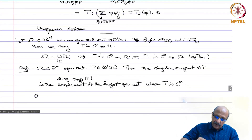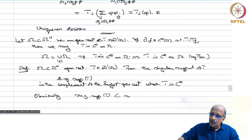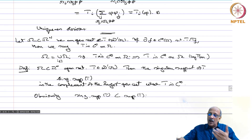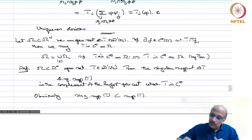Obviously, the singular support of t is contained in the support of t, because on the complement of the support of t, t is 0, which is automatically a C∞ function. Therefore, the singular support will always be contained in the support of t.